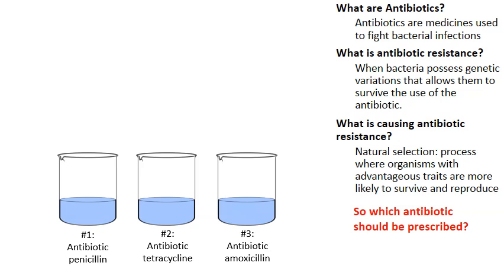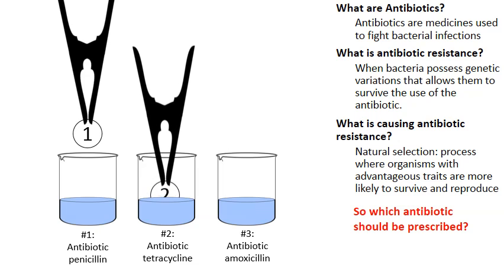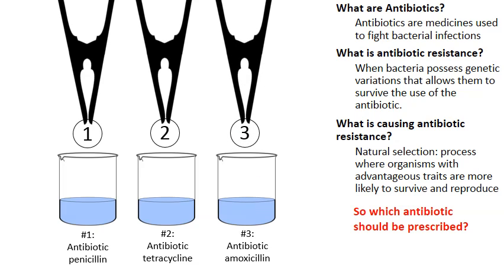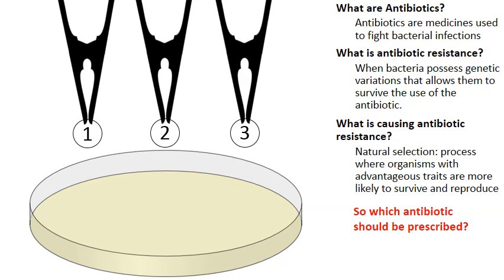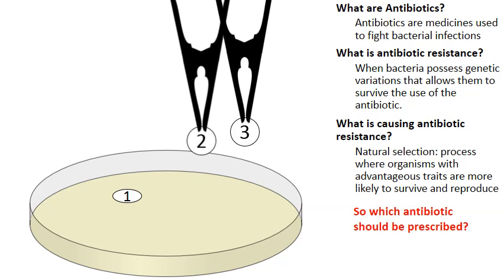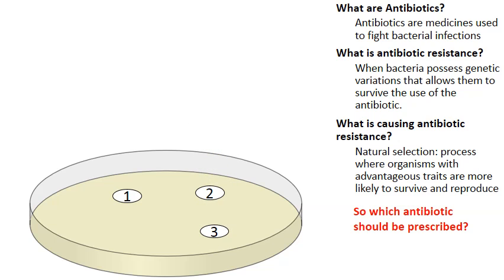Next, we're going to soak little white cotton discs, each in a different kind of antibiotic. Number one has been soaked in penicillin, number two in tetracycline, and number three in amoxicillin — three different kinds of antibiotics — to learn which one can be used to treat this person. We add those cotton discs to the petri dish that we've spread bacteria over, and then allow the bacteria time to grow.